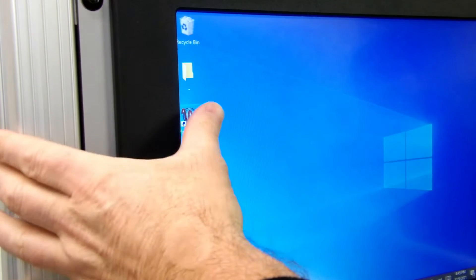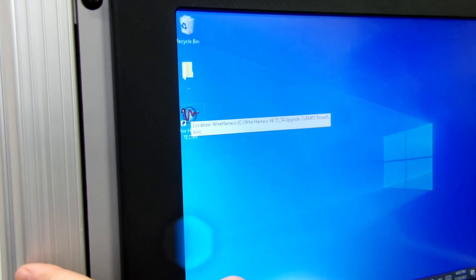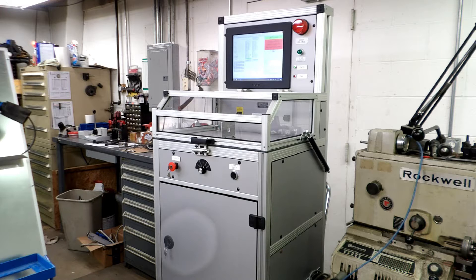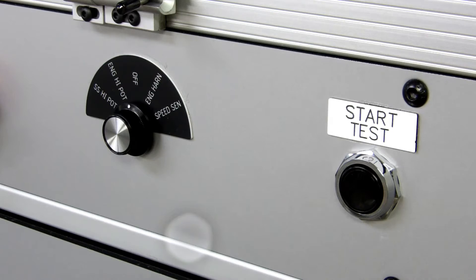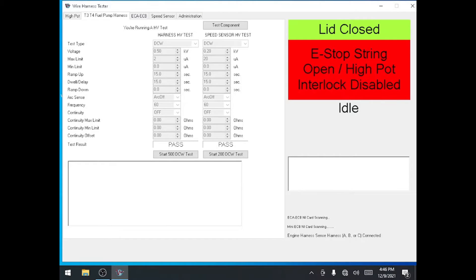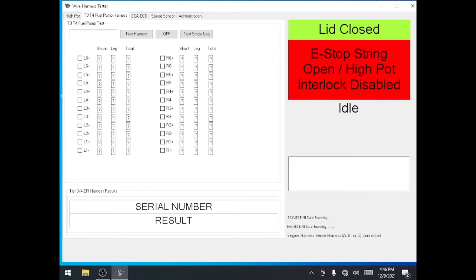At the operator console, if the test software is not already open, double tap the wire harness tester icon on the desktop. Below the lid on the console, change the selector switch to ENG HARN. The software will change to the engine harness test screen.